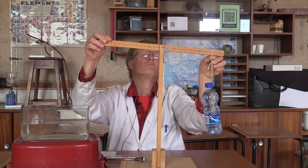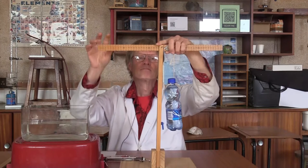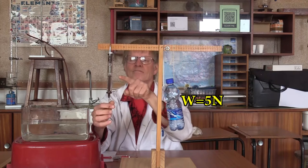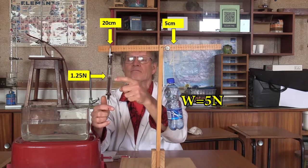Now we move the bottle closer. We are going to put it 5 centimeters from the fulcrum. And we are going to place the spring scale again at 20 centimeters. And now we see a very small force, 1.25. That's all that is necessary to balance the bottle.